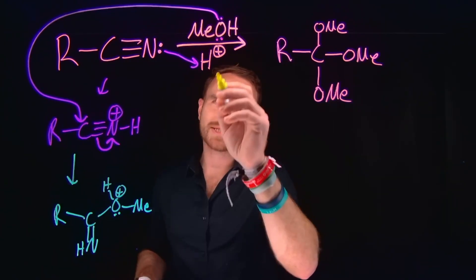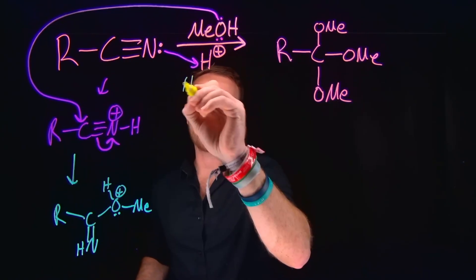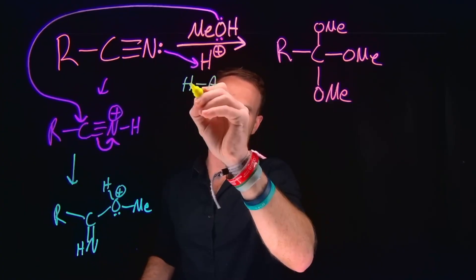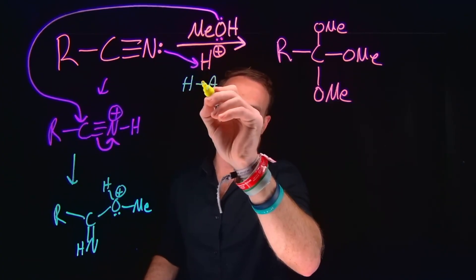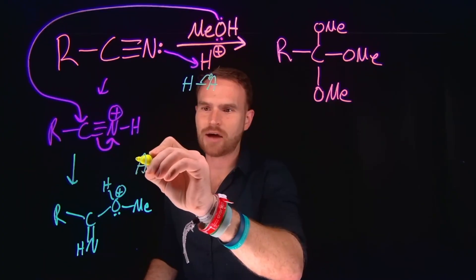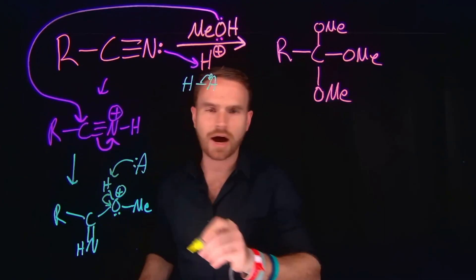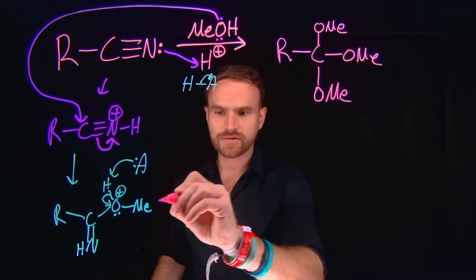And remember that when we used an acid to protonate nitrogen, we generated the conjugate base. So for example, if we had used HA, and this had taken a proton from this acid, this would have generated the conjugate base. And that conjugate base can now be used to come and do a proton transfer where you abstract this hydrogen to leave us with our carbon-to-oxygen that is going to be neutral.